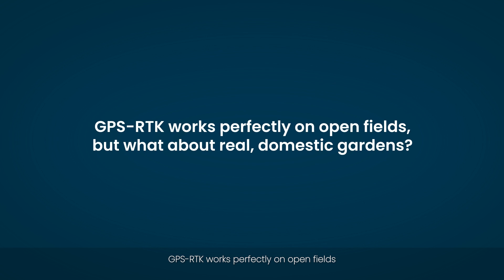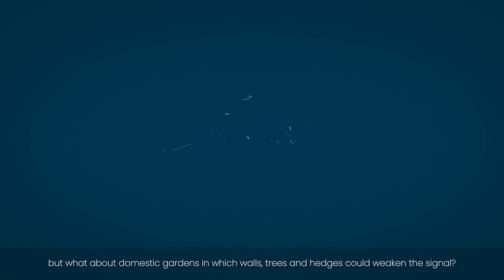GPS RTK works perfectly on open fields, but what about domestic gardens, in which walls, trees and hedges could weaken the signal?